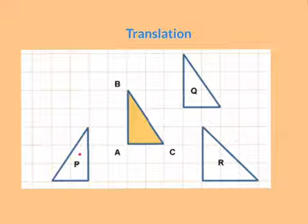So you can see I can't make it P because it's facing the opposite direction. I can't make it R because it's the wrong size. I can only make it Q by pushing it along and then up. That's translating the shape.